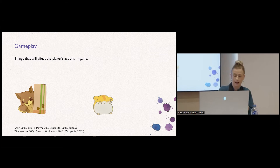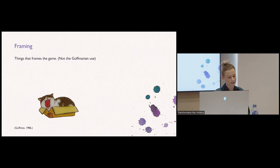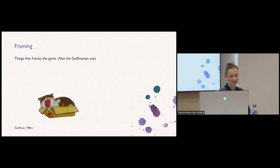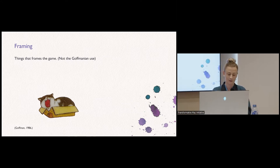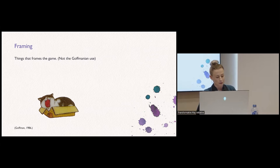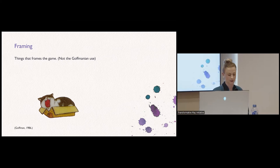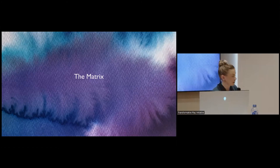The second term is 'framing' — everything outside of gameplay. I am not using the Goffmanian version of the term, but instead that of a frame around a picture. If the game is a painting, the framing is the frame that enhances that picture — or the box that enhances the cat. This would include pre-game activities such as workshops, or post-game activities such as facilitated debriefs. Now we are ready to head into the matrix.